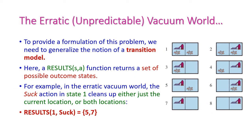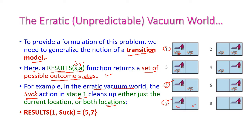Hence, in this environment there is a need for a generalized notation of the transition model. Here, the result of (S, A) — meaning the action A performed on state S — returns a set of possible outcome states, not a single state. For example, in the erratic vacuum world, the suck action in state 1 cleans up either just the current location, reaching state 5, or both locations, reaching state 7. So the result of (state 1, suck) equals {state 5, state 7}.